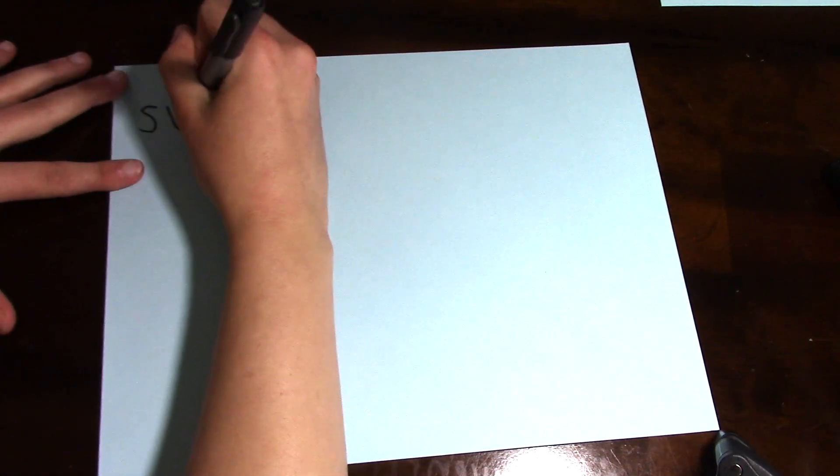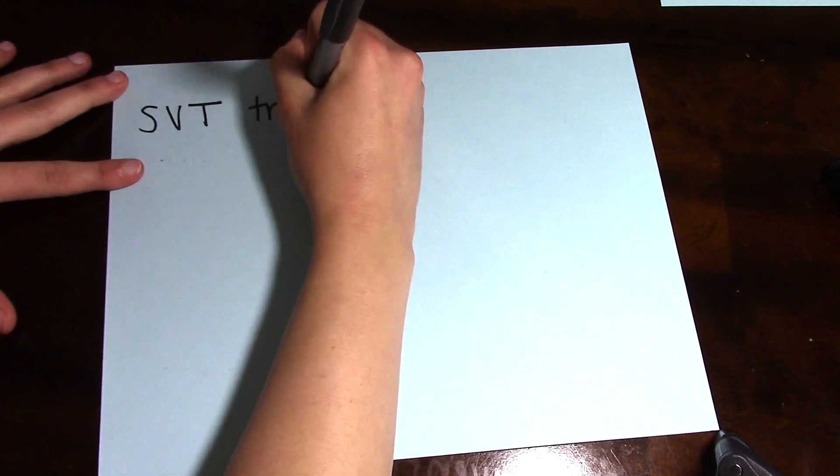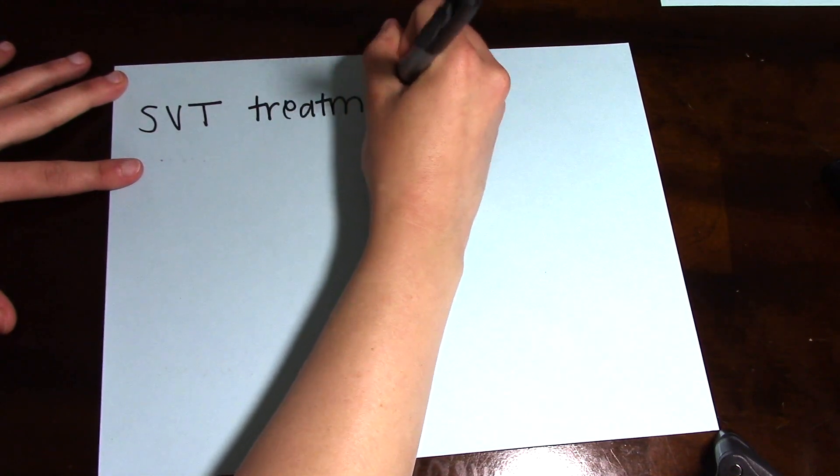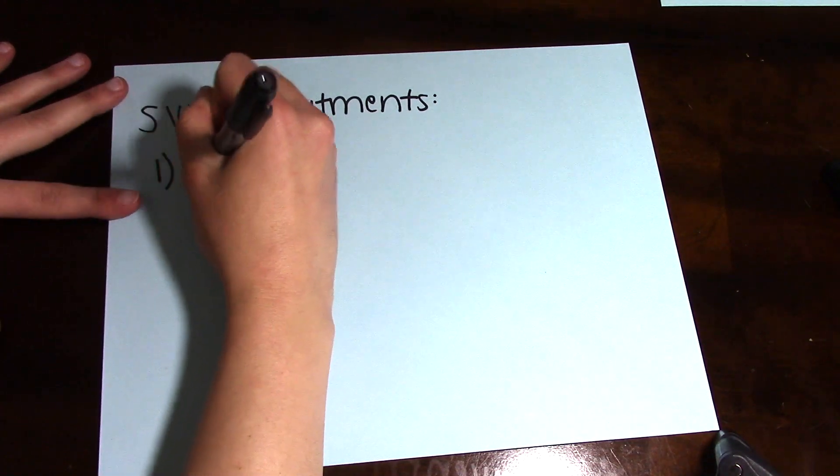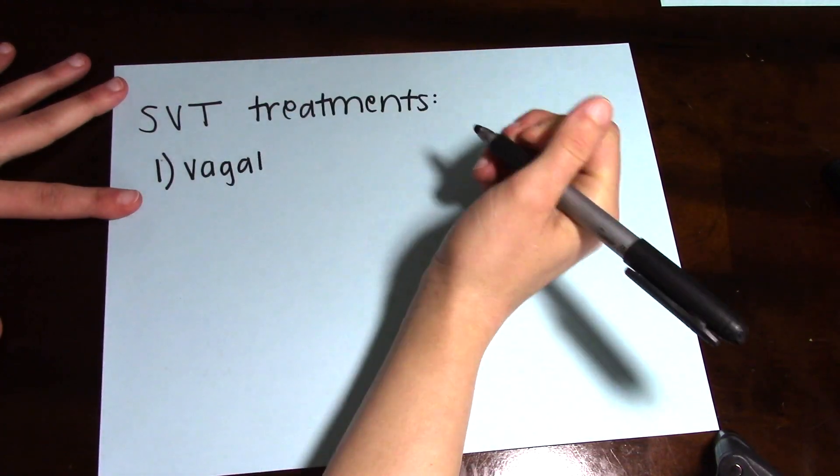SVT treatments: there are three main treatments. The first is vagal maneuvers, which can be done by bearing down or blowing on your thumb—anything that stimulates the vagal nerve to hopefully lower the heart rate.